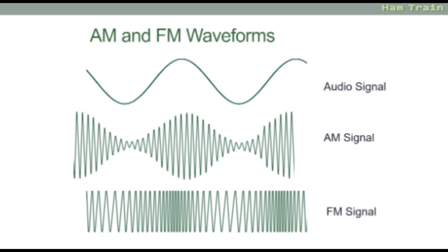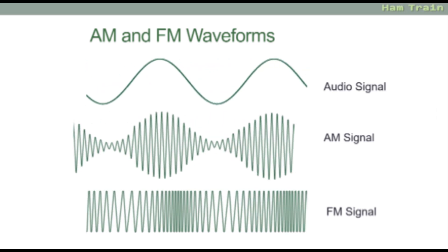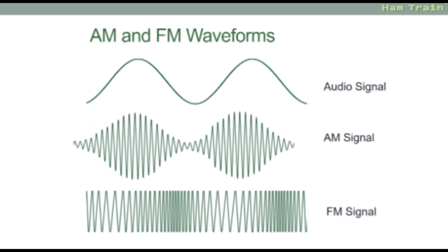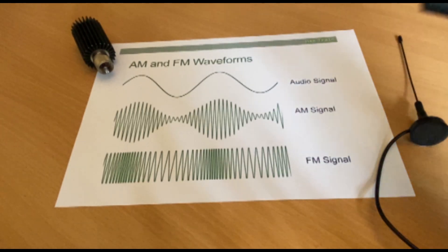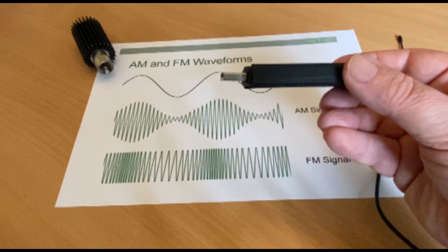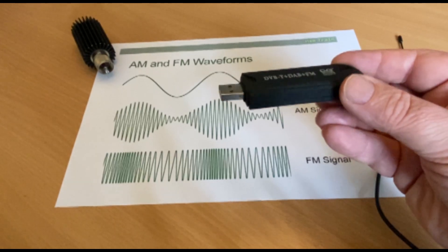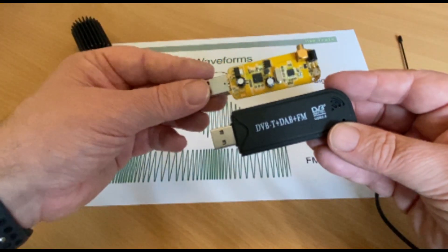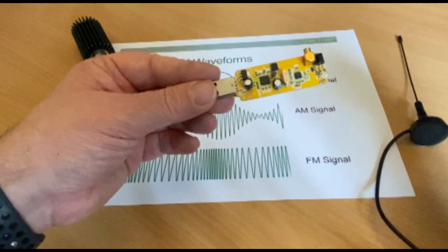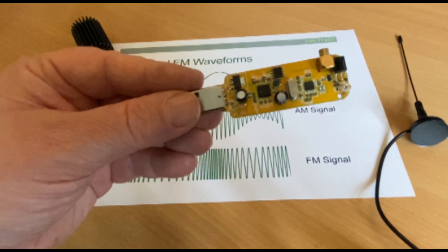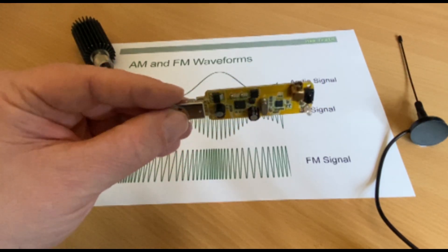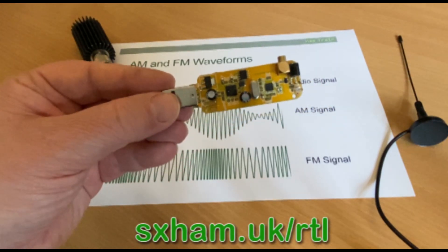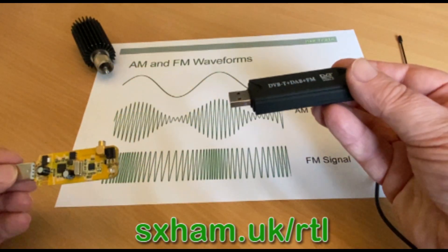You'll hopefully be familiar with the waveform diagrams, but what do actual FM, AM and SSB signals look like? To take a closer look we're going to use a software defined radio. These can be set to show the spectrum and waterfall of any given frequency. The software defined radio we're going to use is a cheap and cheerful £10 USB dongle receiver. These are great value for money and highly recommended to get your head around how some of the concepts work. You can find out more about the dongles at sxham.uk forward slash RTL.